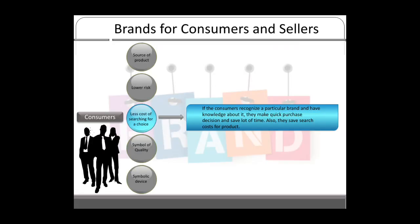The third function is less cost of searching for a choice. If consumers recognize a particular brand name and have knowledge about it, they make quick purchase decisions and save a lot of time. They also have lower search costs, so knowing the brand makes it easy to go to the store and pick the brand they love instead of searching for other brands.